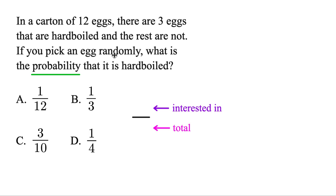Now for this one, if you pick an egg randomly, what is the probability that it's hard-boiled? Well they tell us only three eggs in this carton are hard-boiled. Those are the three that we're interested in, so we'll put that up top. But the carton has 12 eggs total, so that's going to be the bottom number.